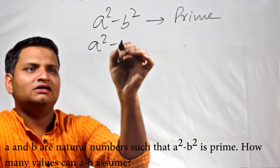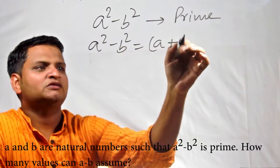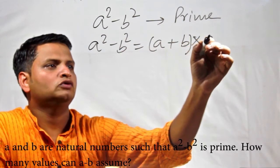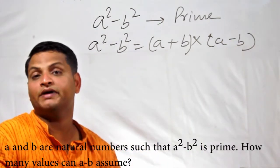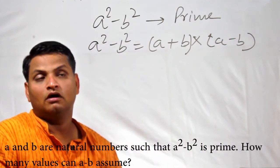So, a² - b² = (a + b)(a - b). Now, let's take up any example of a prime number, say 7.